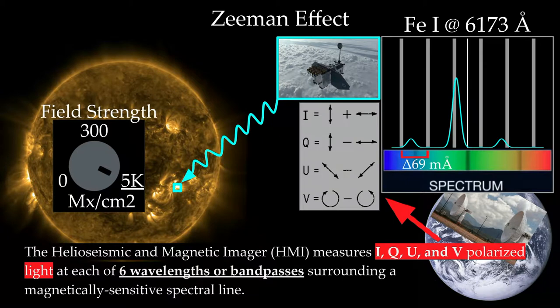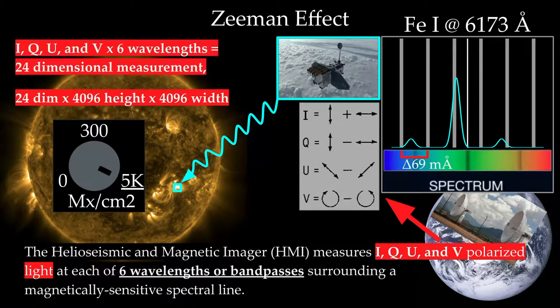So the HMI imager does that, and what it does is it measures this I, Q, U, and V differently polarized light at six different wavelengths or band passes to collect enough information that we may be able to figure out the magnetic field just from these measurements of light. So this creates this 24 dimensional image with a 4096 height and width, and we can use these as our inputs for figuring out what the magnetic field is.